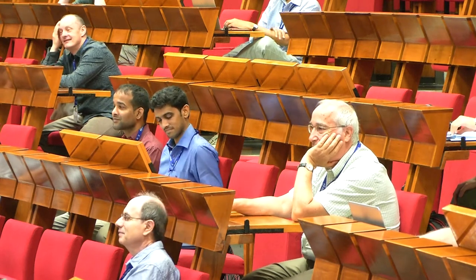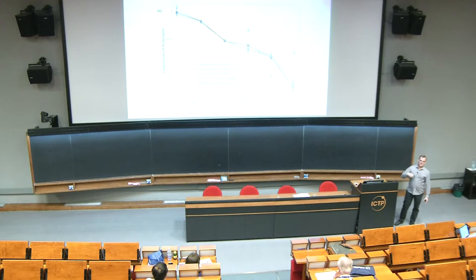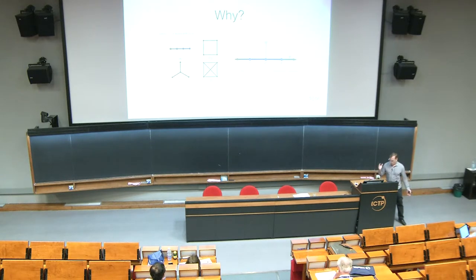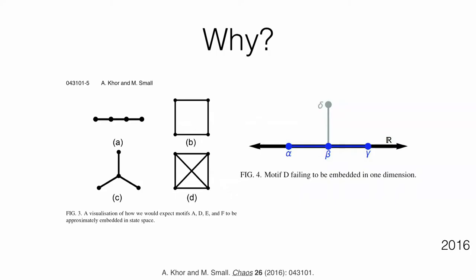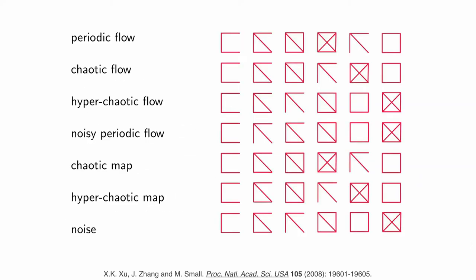This was the first thing that we did. We saw that we see these different subgraphs. The question we ask is why would this happen? This is all experimental. This is depending on what type of time series or system I'm generating a time series from, I then do the embedding, build the network, look at the subgraphs, and you see different subgraphs occurring more or less frequently.